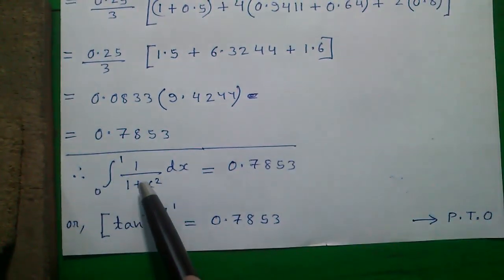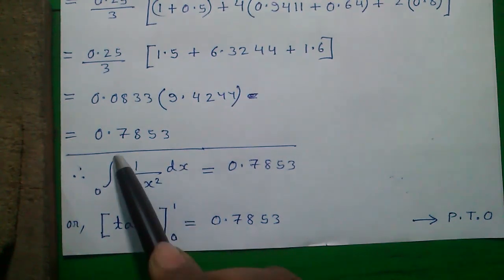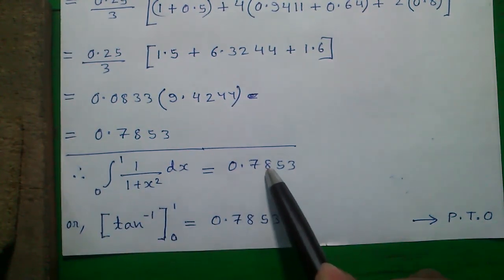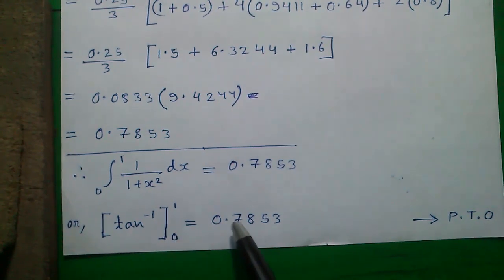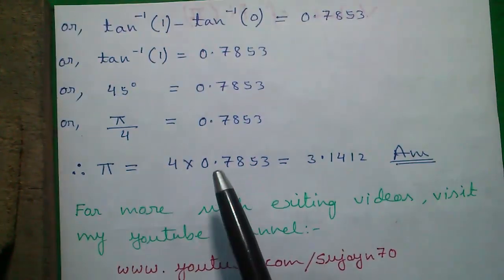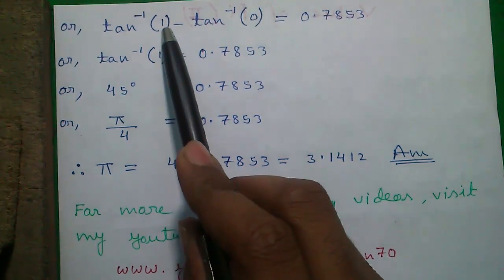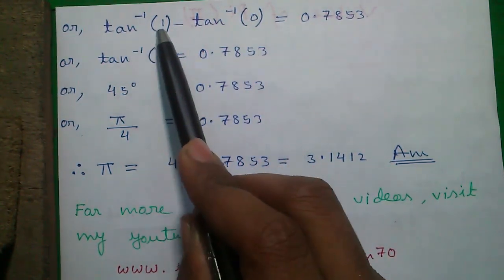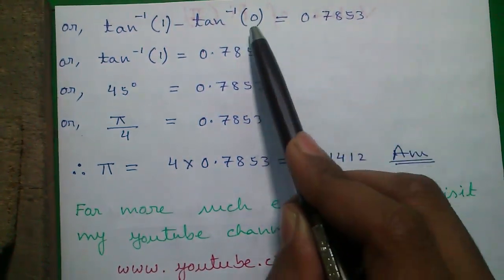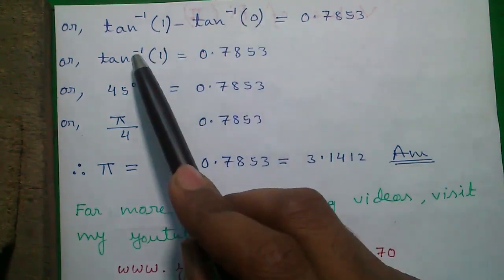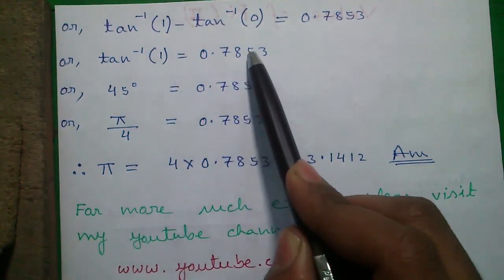Hence, we can say 1 divided by 1 plus x square dx with upper limit 1 and lower limit 0 equals to 0.7853 numerically. We know from common derivative chart 1 divided by 1 plus x square dx is the derivative of tan inverse. So we can write integration of tan inverse with upper limit 1 and lower limit 0 equals to 0.7853. We can break any integration with upper limit and lower limit, so tan inverse of 1 minus tan inverse of 0 equals to 0.7853. So we have tan inverse of 1 equals to 0.7853.